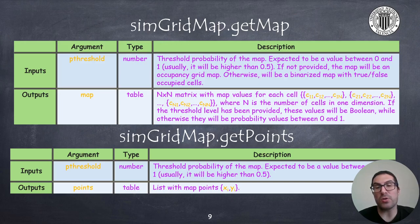Moreover, the getPoints function returns the coordinates of occupied cells. In this case, both functions use this threshold and this should be a probability between 0 and 1, but obviously it is expected that this value is higher than 0.5.